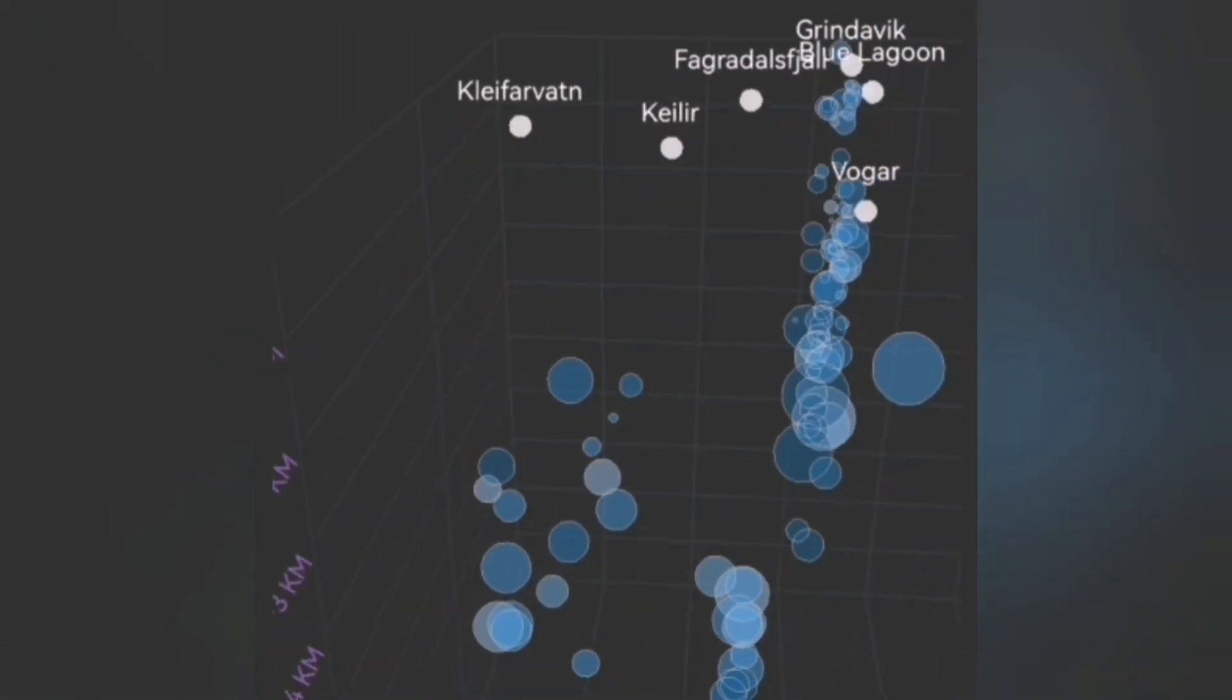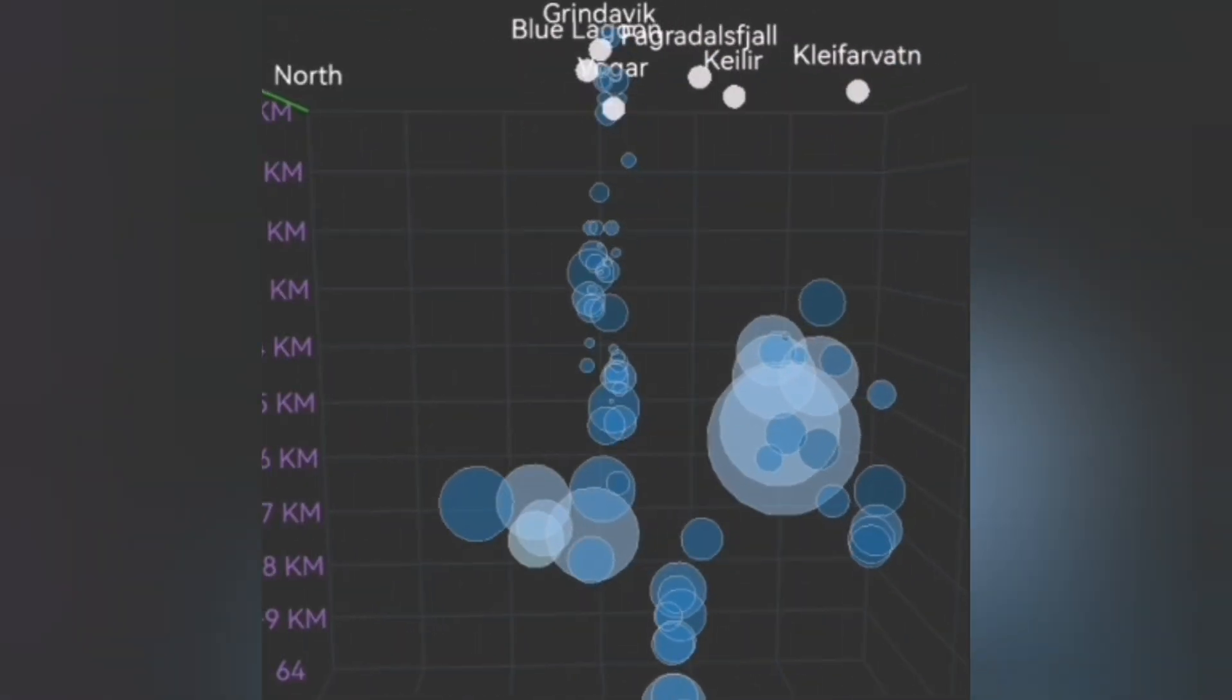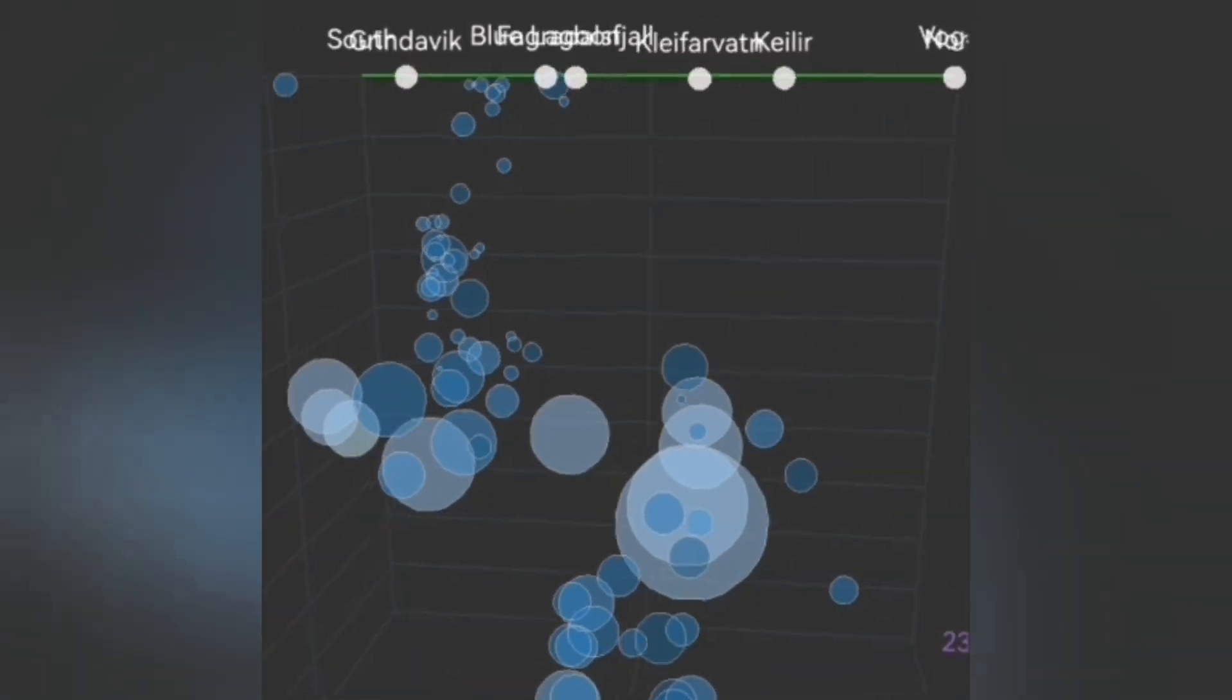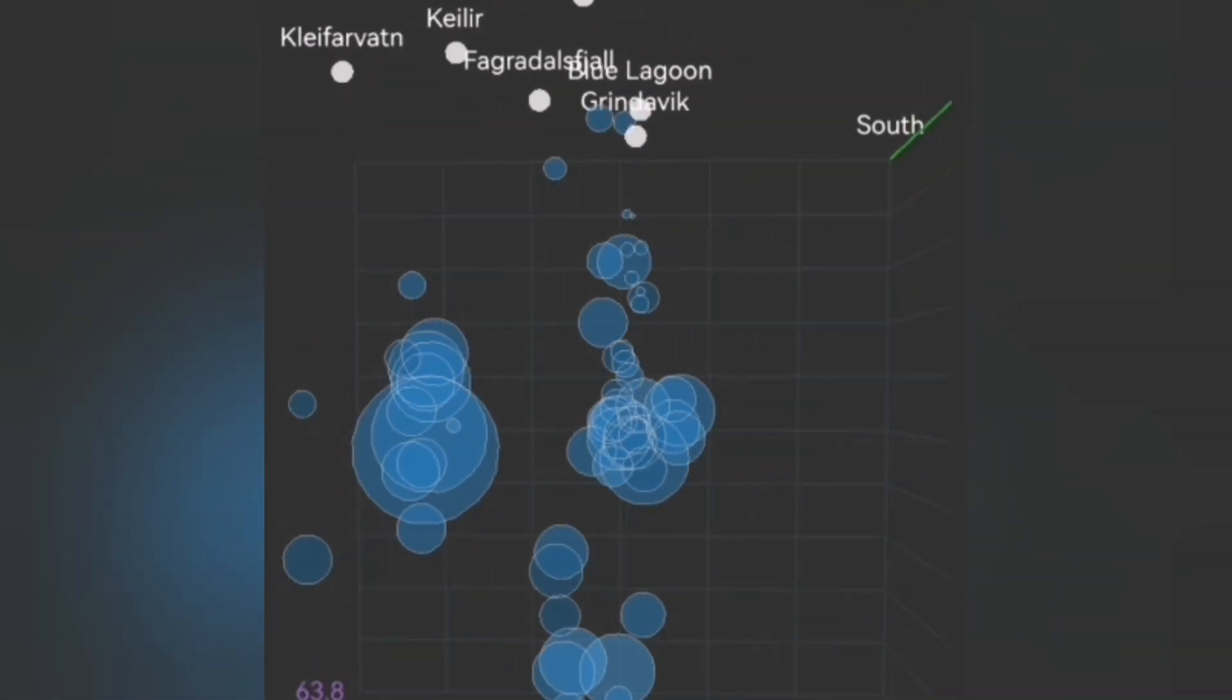Just a few days ago, the earthquakes were small, they were all at the depth of 5 km. Now it seems they're rising. We have bigger earthquakes, 3.3 we had, and the earthquakes are getting shallower, rising.